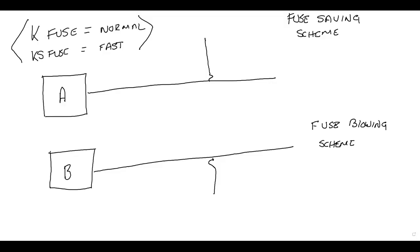K and KS fuses are the typical ones you'll see in the field. A K fuse is a fast-blow fuse. A KS fuse is a slow-blow fuse. Fast and slow refer to the speed at which the fuse blows — not its amperage rating. Certain companies also use different fuse schemes: the fuse saving scheme and the fuse blowing scheme.